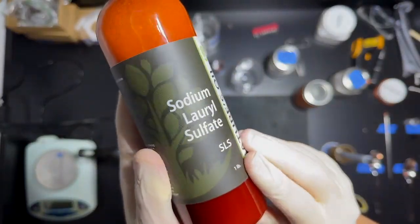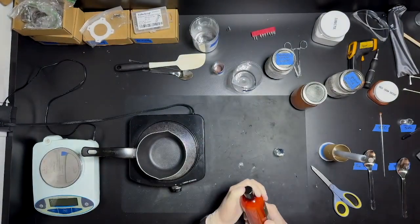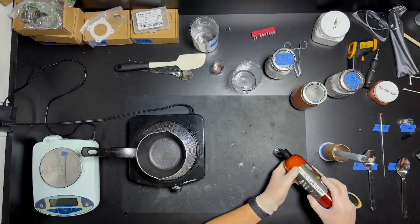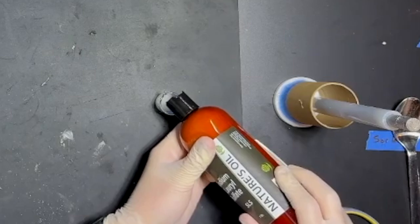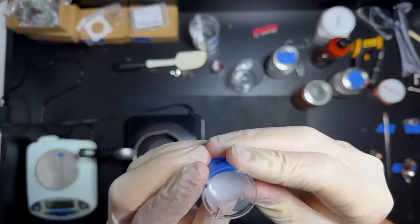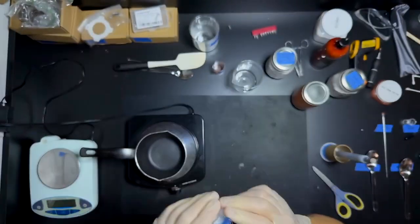And then I have one more ingredient, SLS. This is my first time using it. It's supposed to decrease surface tension of the propellant, making it easier to pour in and prevent less air bubbles. I add this once the fuel is melted down.